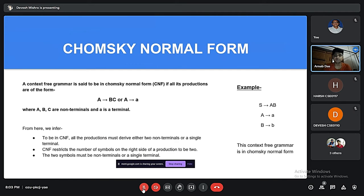A context-free grammar is said to be in Chomsky Normal Form if all its productions are of the form: A goes to BC or A goes to a, where A, B, C are non-terminals and a is a terminal. In CNF, all productions must derive either to non-terminals or single terminals. CNF restricts the number of symbols on the right side of a production to be two, and the two symbols must be non-terminals or a single terminal.